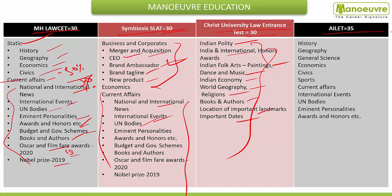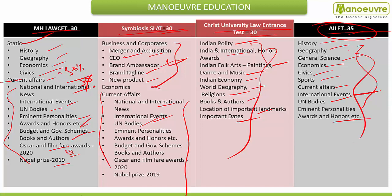For AILET, All India Law Entrance Test, there will be 35 questions, and the nature of this paper will also be miscellaneous. History and current affairs will have equal value here. History, geography, general science, economics, civics, sports, and current affairs — all these areas come in. Current affairs parts include awards, honours, important personalities, and international events. United Nations bodies will also be covered here, along with awards and honours. Basically here also it will be 50-50: 50% static GK and 50% current affairs.